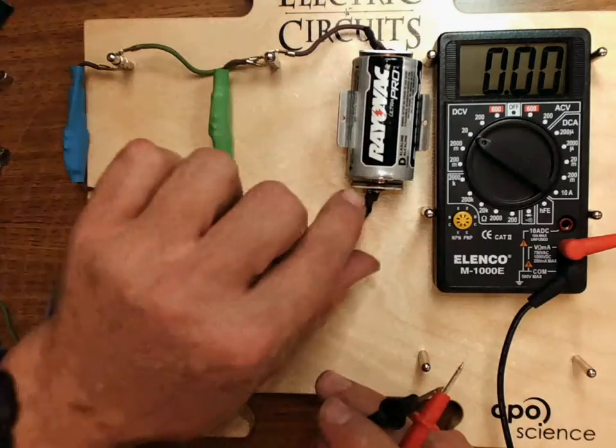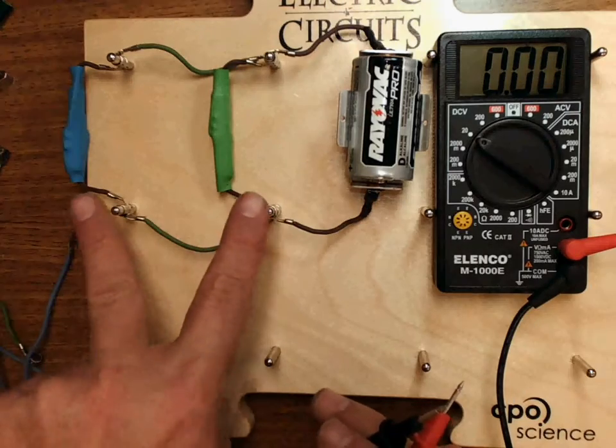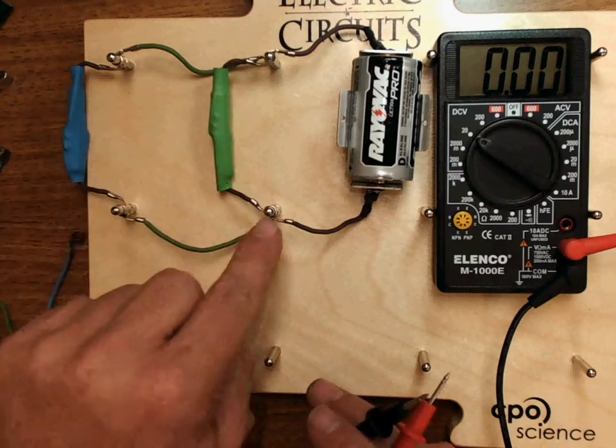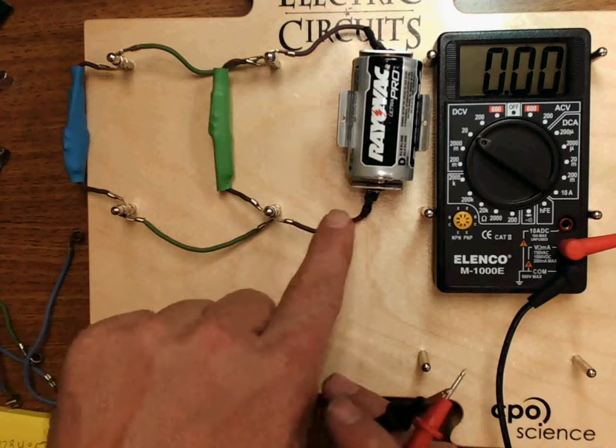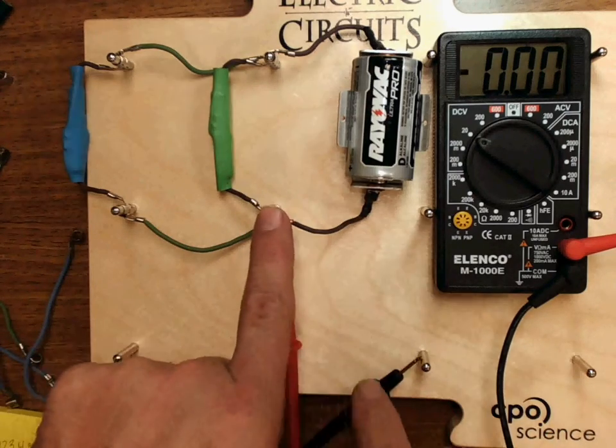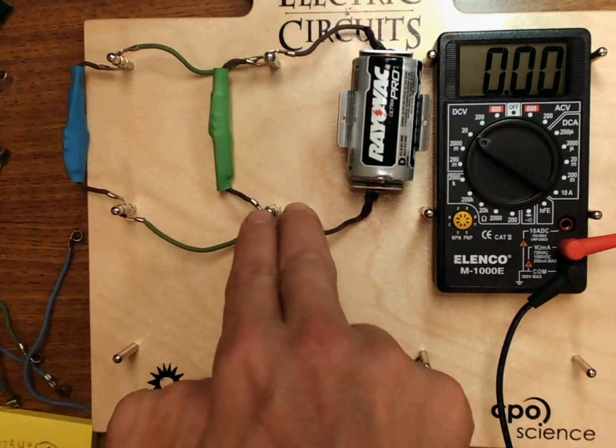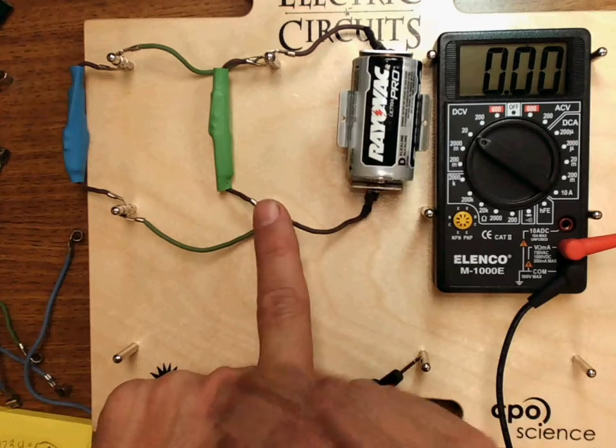Because the voltage that's coming out of the battery splits here and it's the same voltage on both. It's as if each one of these is separately connected to the battery. And they are. This is the battery right here, and each of these wires separately connects to the battery. So they each get the same voltage.